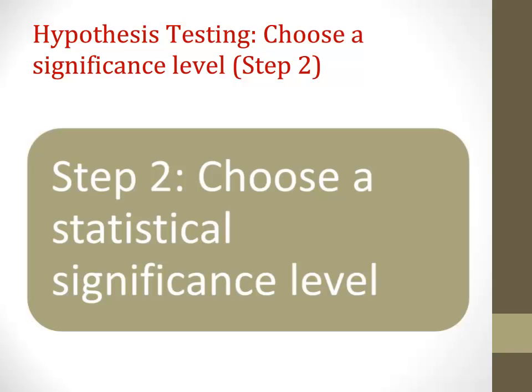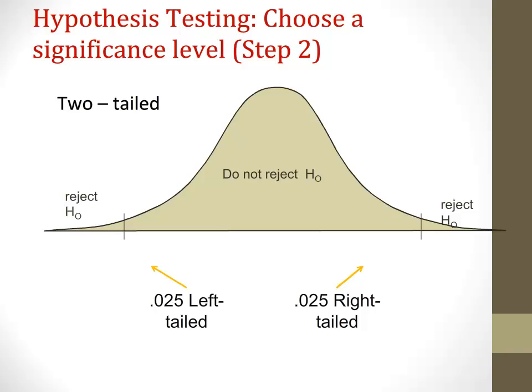Another way to think about this: we would expect to make such an error 1 in 20 times — for example, 0.05 is 5%, or 1 in 20. One more way to think about this: with a significance level of 0.05, we want to be at least 95% confident that if we reject the null hypothesis, we've made the correct decision.